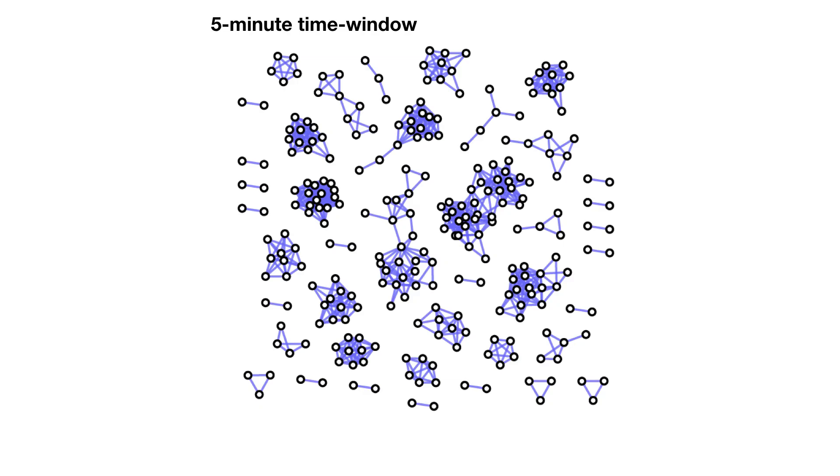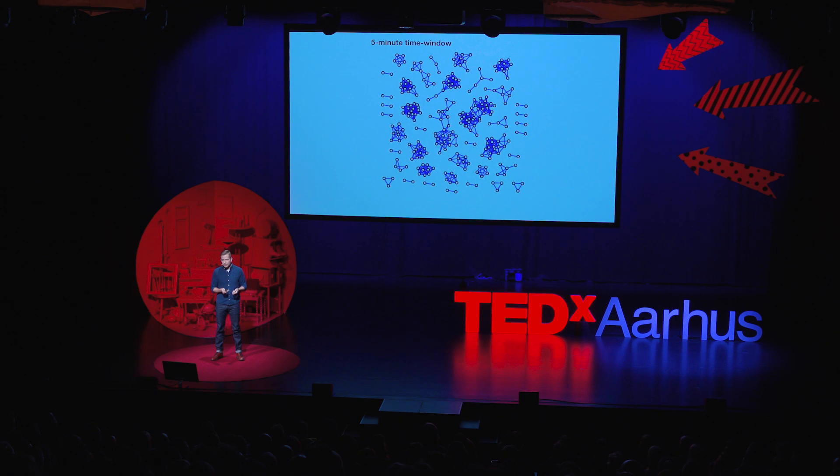One day, as the data was rolling in and we were working on something boring and technical like Bluetooth connection strength, we more or less accidentally plotted a five-minute snapshot of all the people hanging out in the real world. This humble picture was basically just all the people hanging out between noon and five minutes past noon on some Tuesday. When we saw this picture, we looked at each other and realized that something significant had just happened.